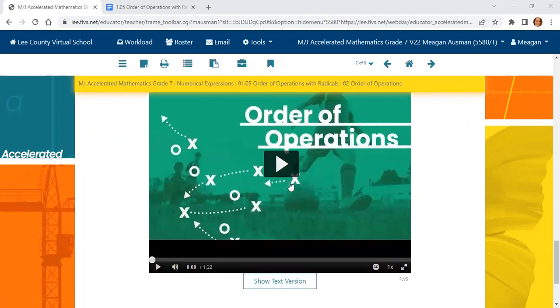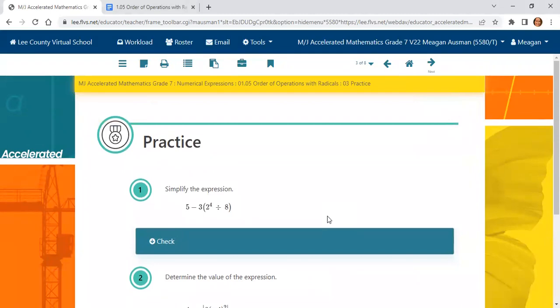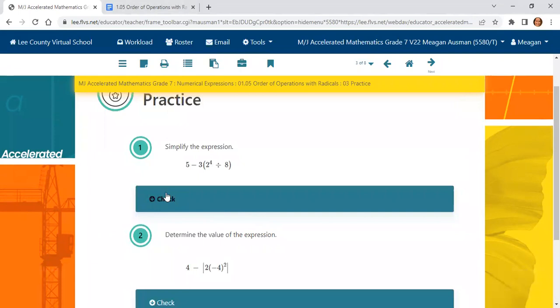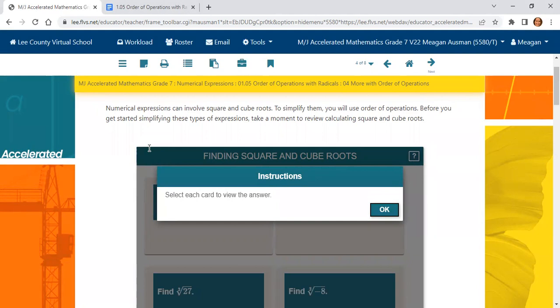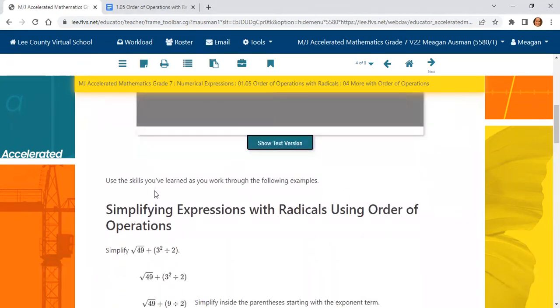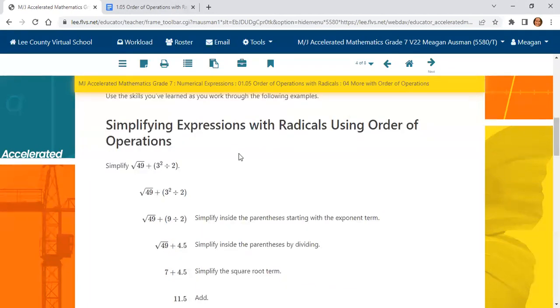There is a short video. You're more than welcome to come back to page 2 and watch that video. It's just reviewing the order of operations. Now we have some practice problems. I want you to come here and write these problems in your note-taking guide and solve them. Then click on the check button to see your work, to make sure your work matches what is supposed to be on there. Now we have more with order of operations. We really haven't done a whole lot yet, but now we're going to get into it. Simplifying expressions with radicals using the order of operations.